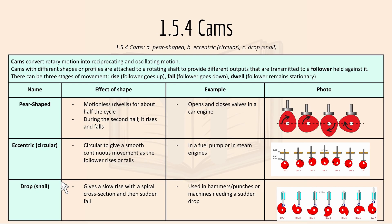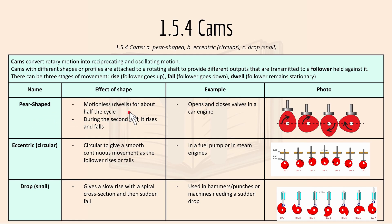1.5.4 is cams — pear shaped, eccentric or circular, and drop or snail. Cams convert rotary motion into reciprocating and oscillating movement. Cams with different shapes or profiles are attached to a rotating shaft to provide different outputs transmitted to a follower held against it. There are 3 stages of movement: the rise (follower goes up), fall (follower goes down), and dwell (follower remains stationary). For pear-shaped cams, the follower is motionless or dwells for around half the cycle, and during the second half it rises and falls — an example is opening and closing a valve on a car engine.